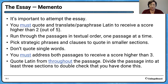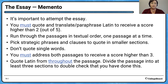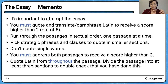Let's do some reminders about the essay you're going to be writing. The essay is a big part of your overall score, so it's important to attempt it. Scoring a one is better than a zero, but we really want you to aim for three or higher. You must quote and translate or paraphrase Latin to get a score higher than two — that's what we're aiming at. Let's talk about how to quote and translate Latin in your essay.